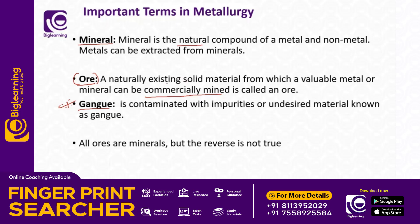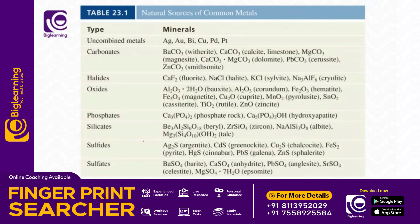The first three important terms are: mineral, ore, and gangue. All minerals are ores, but all ores are not minerals — that is the key statement and a likely exam question. Now these three terms are clear. Next, we will look at the natural forms of metals. This is very important — we will get exam questions, even marker questions, on this area.